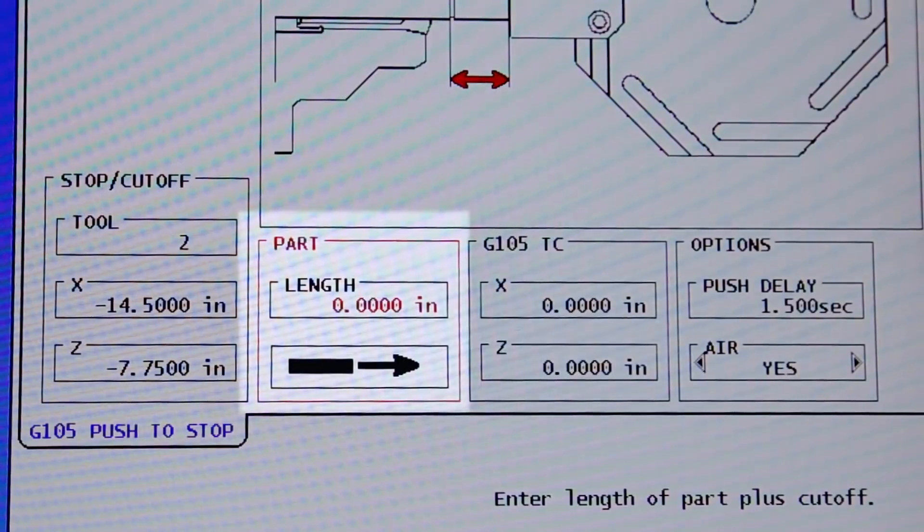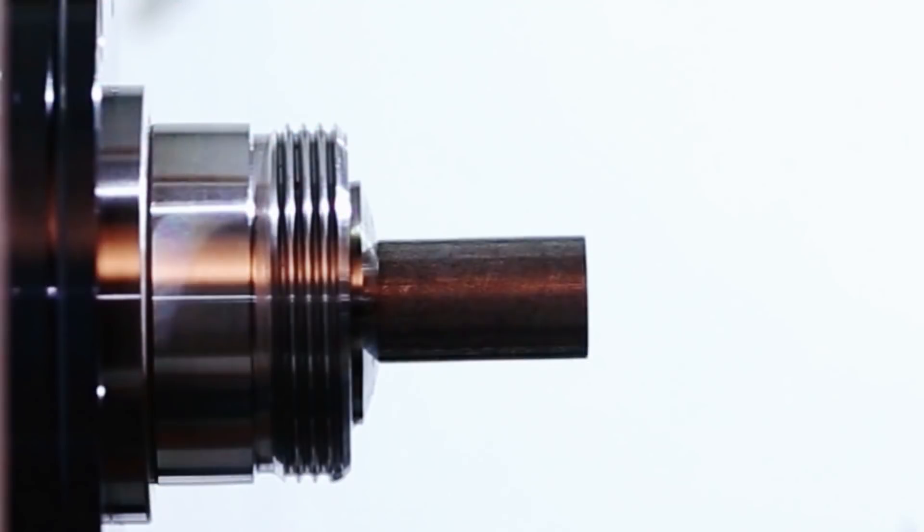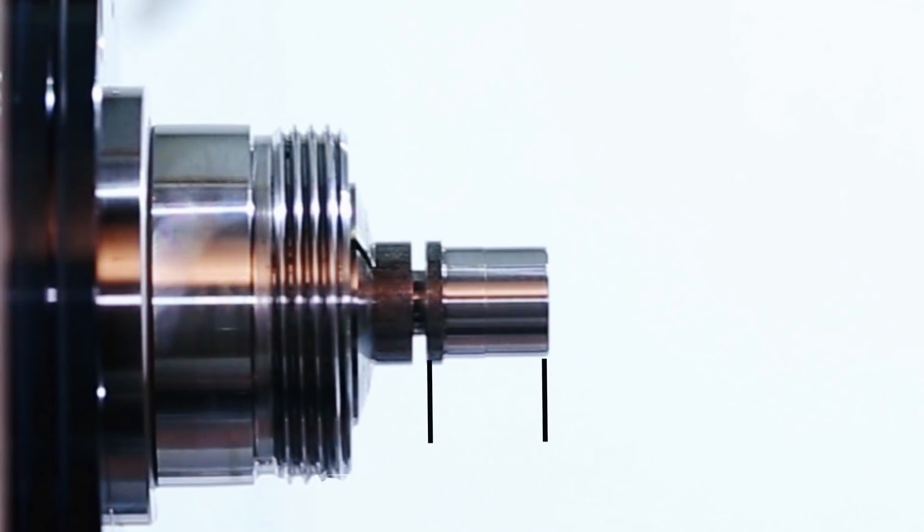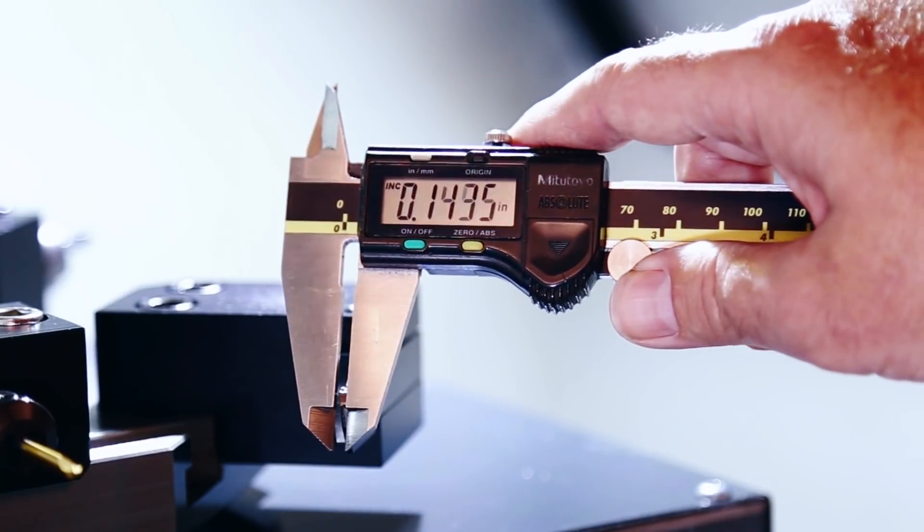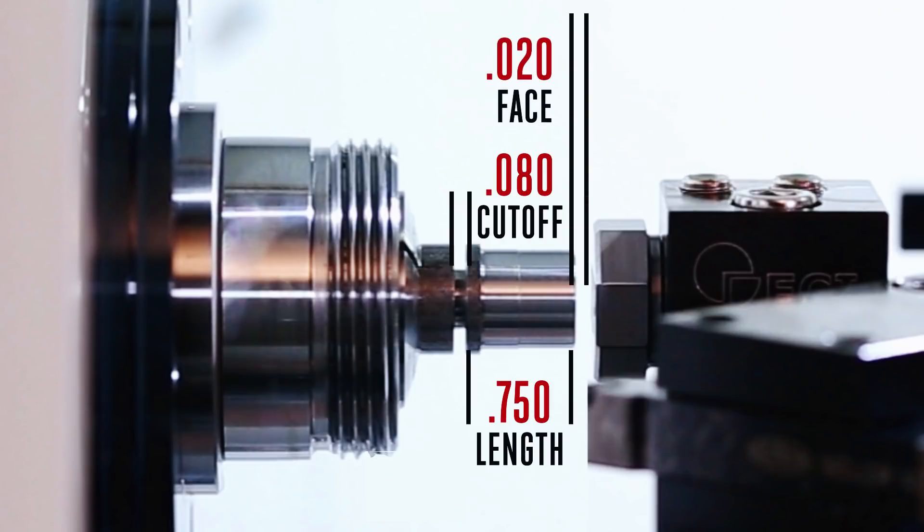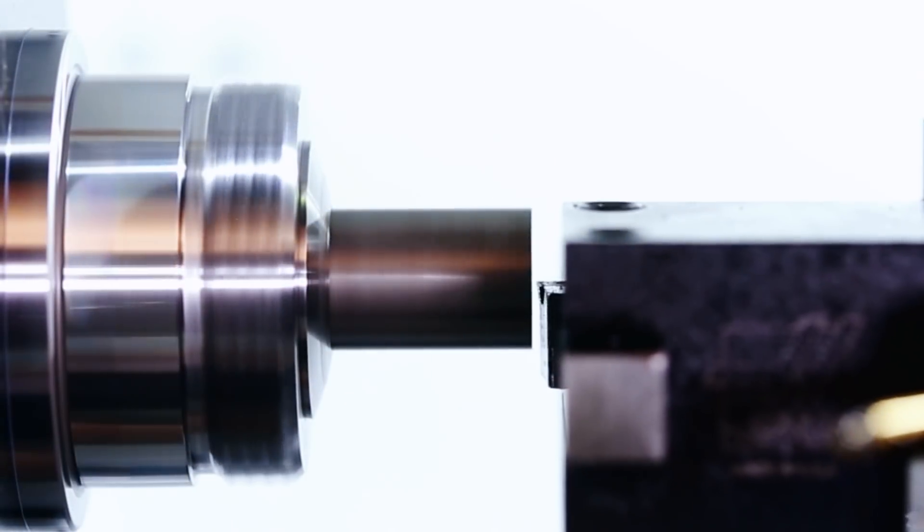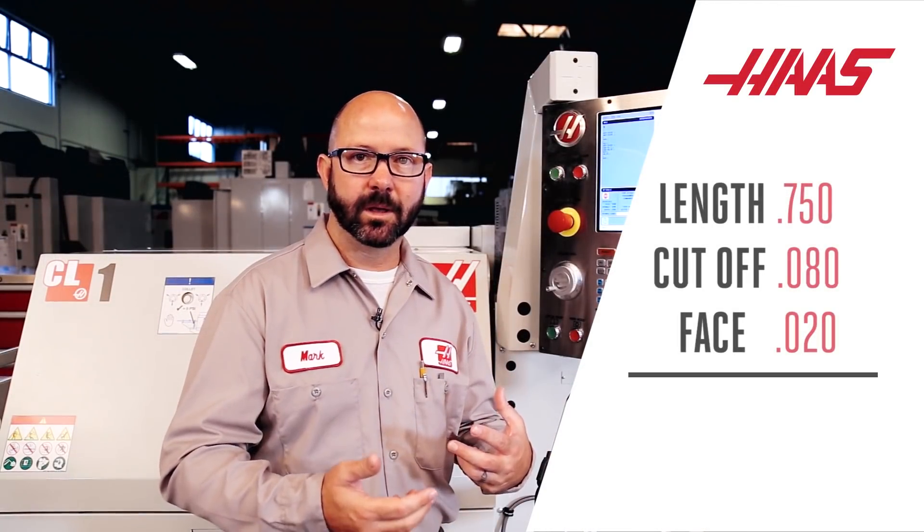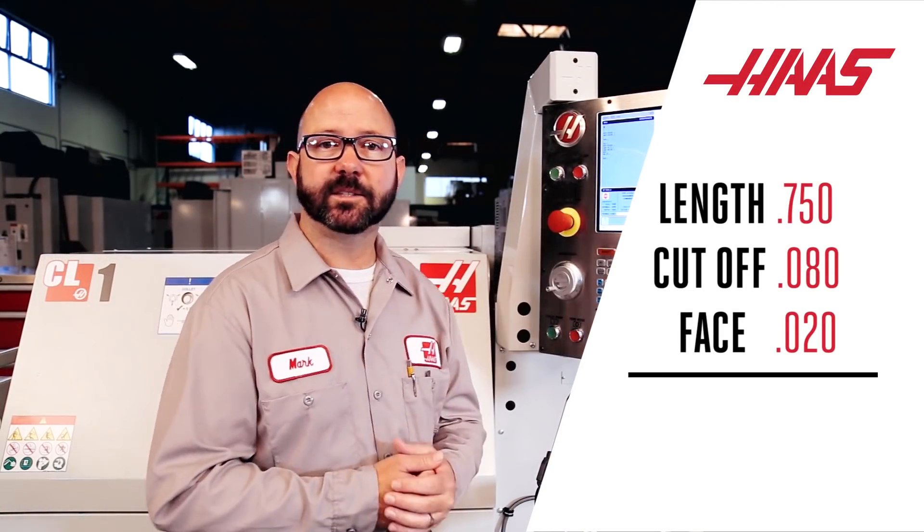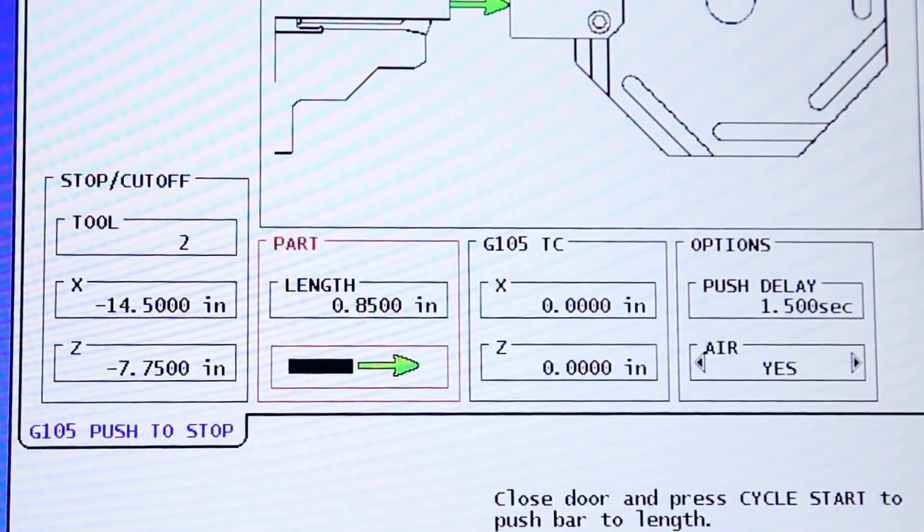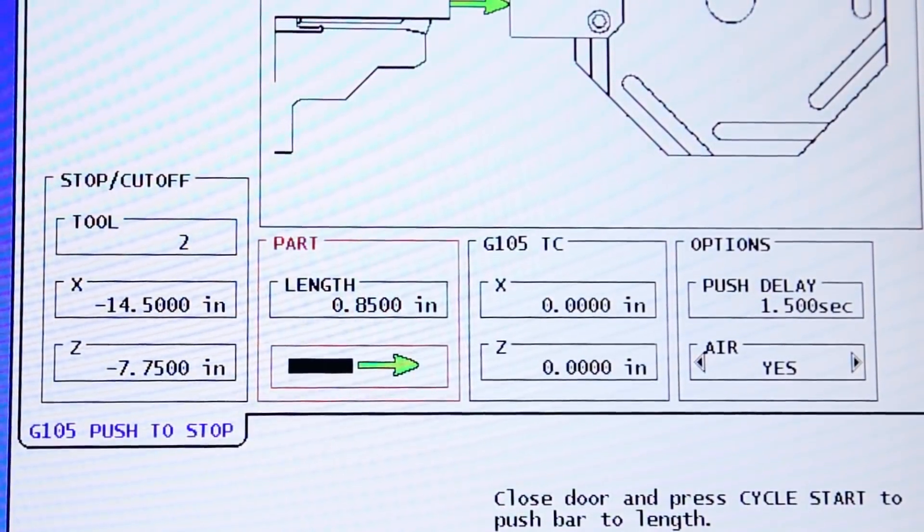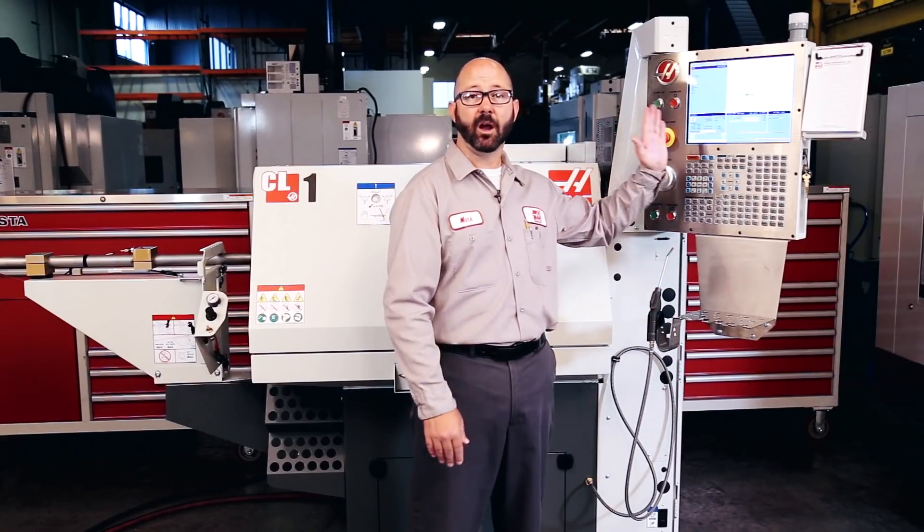On to column two. Here it is asking for our part length plus our cutoff width plus any amount of stock that we'd like to face. Our part is .75 inches. Our cutoff width is two millimeters, about 80 thousandths of an inch. And I'd like to face off 20 thousandths of an inch off the front of each part. So if we add all those together, my part length is going to be 850 thou. That's .85 inches. This is how far the machine is going to push out our bar with each cycle. That's what we're going to enter right here. .85, enter.